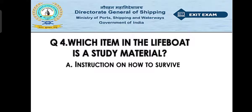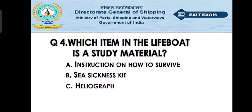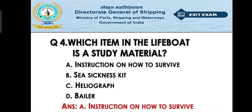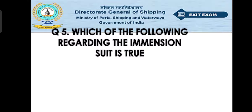Question number four: which item in the lifeboat is a study material? Option A: instructions on how to survive. Option B: sea sickness kit. Option C: heliograph. Option D: bailer. The right answer is option A — instructions on how to survive, basically a survival manual. The sea sickness kit is a medicine kit, and the heliograph and bailer are equipment, not study material.